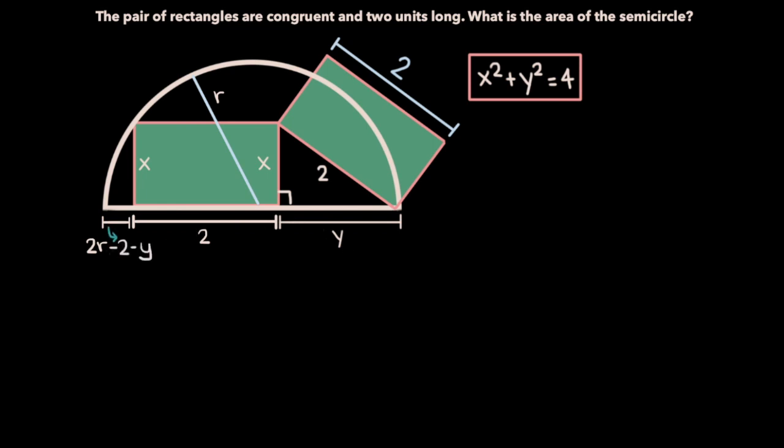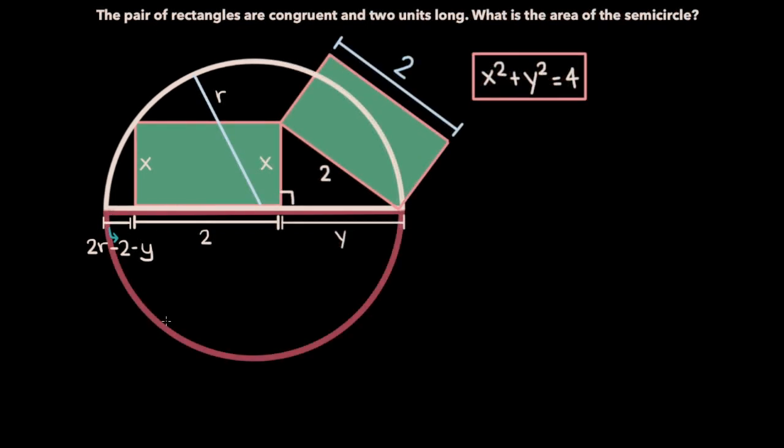Now here's the interesting part of this problem. In this figure, we just have the top half of this circle. Let's draw in the bottom half and see what happens. So I've drawn in the bottom half of this circle in this maroon color right here. Now let's notice something. If this line segment, that is the short side of the rectangle, is of length x, then this line segment, in light blue, must be of length x as well.